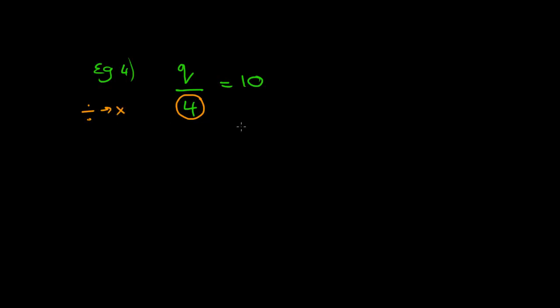So what's the opposite of divide? Well, hopefully you said times. So if I cross the 4 out, I'm going to put him on the right-hand side, and the opposite of that divide is times. So we're left with Q equals 10 times 4, which Q equals 40.